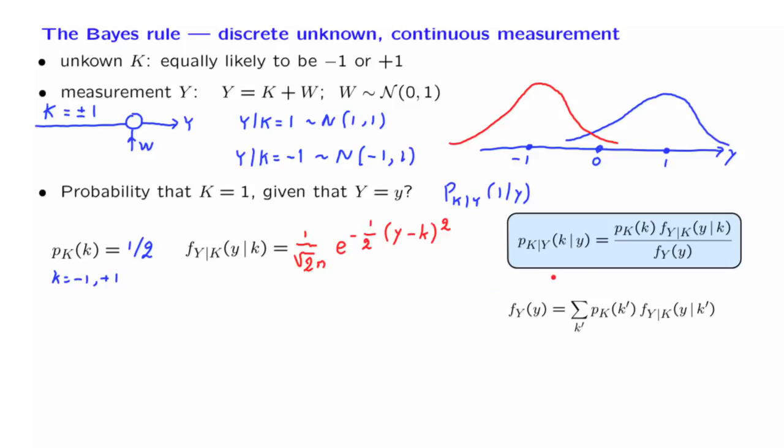Let us continue with the next term in this expression. We need to determine the denominator, which is obtained by taking a sum over the different choices of K. There are two choices, and each choice has a probability of 1 half.